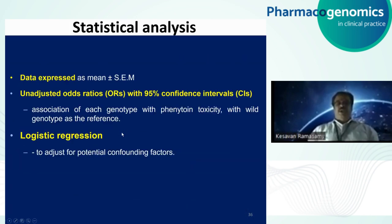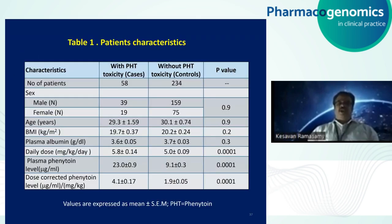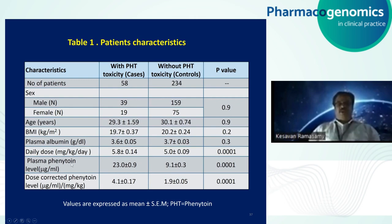We calculated the odds ratio for the risk attributed by each genotype for phenytoin toxicity, comparing with the wild type star 1 / star 1 as the reference group. Later, we adjusted for confounding using logistic regression. Looking at patient characteristics, 58 patients developed phenytoin toxicity and 234 served as controls. The plasma phenytoin levels in those with toxicity were significantly higher than those in the control group.